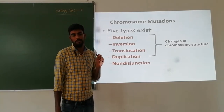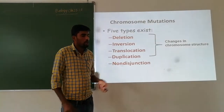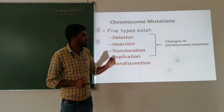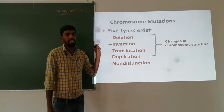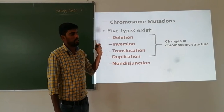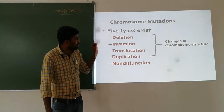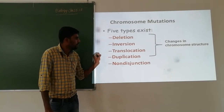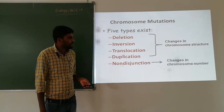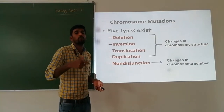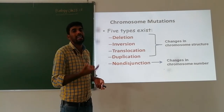Chromosomal aberrations are changes in chromosomal structure, especially deletion, inversion, translocation, and duplication. The last type — non-disjunction — means changes in chromosomal number: the chromosome number will increase or decrease due to failure of chromosomes to separate during meiosis.